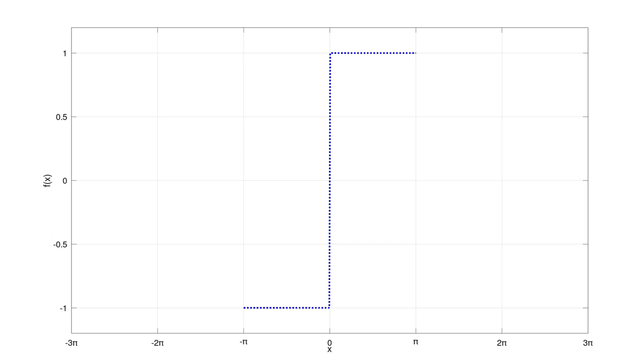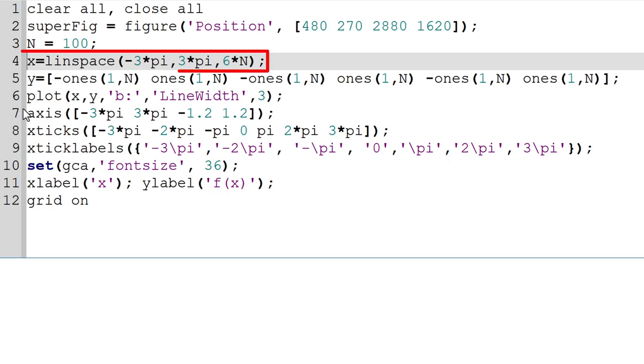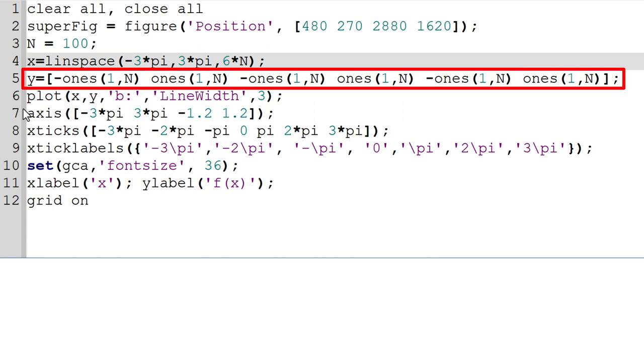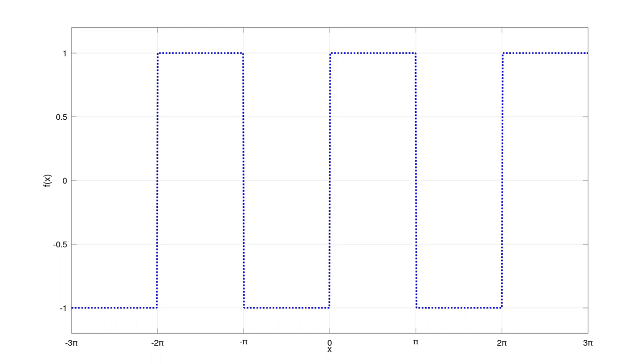Next step is to extend it to minus 3 pi and 3 pi. We can simply triple the size of vector x and add additional two sets of square waves to the variable y. Then you can see what you expected.